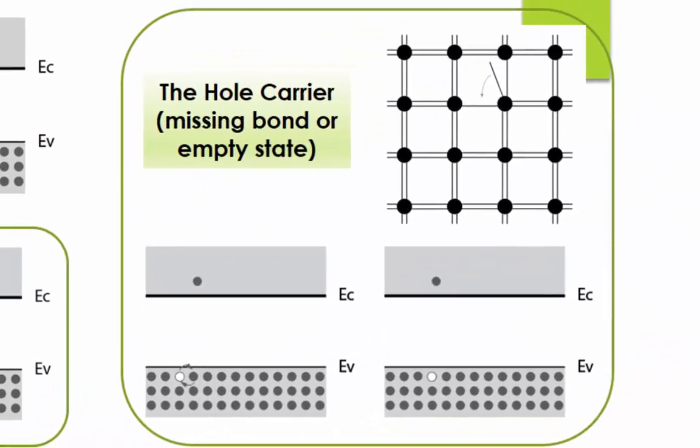The other carrier is called the hole. In the bonding model, when a valence electron breaks free, it leaves behind a missing bond. Nearby bound electrons could jump into this missing bond and in turn leaves behind a missing bond in its original place. Thus, it appears that the missing bond is moving around.